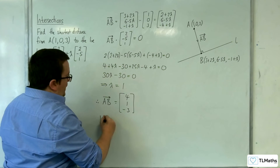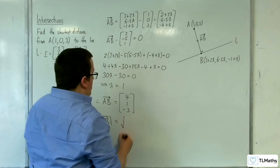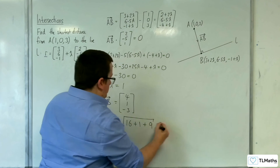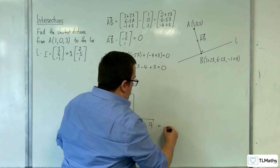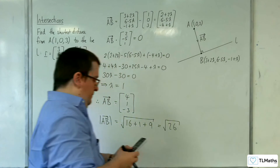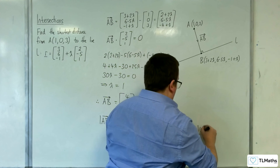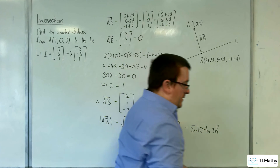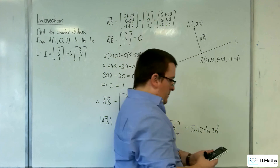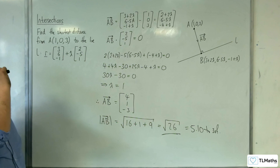So the length of the vector AB is the distance between the point and the line. That's the square root of 4 squared plus 1 squared plus (-3) squared, which is the square root of 26. To 3 significant figures that would be 5.10, and that is the exact distance we were looking for. That is how we can find the shortest distance from a point to a line.